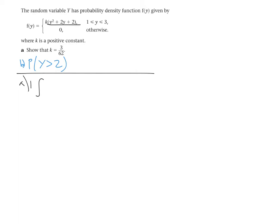So I'm going to start by putting k on the outside of the integration. We're integrating between the limits 1 and 3, and we've got y squared plus 2y plus 2 on the inside, and all of that's equal to 1.